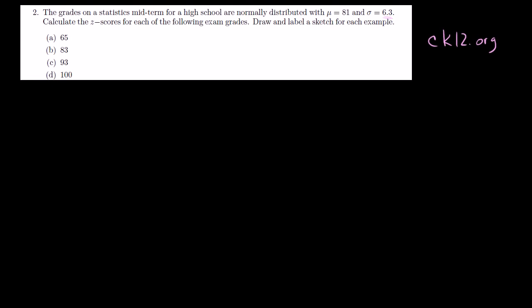The grades on a statistics midterm for a high school are normally distributed with a mean of 81 and a standard deviation of 6.3. Calculate the z-scores for each of the following exam grades. Draw and label a sketch for each example. We could probably do it all on the same example.